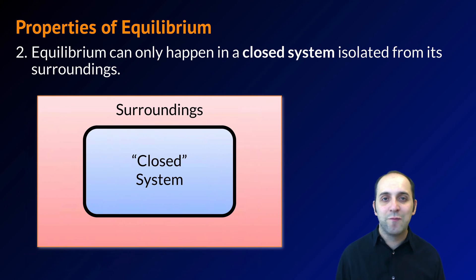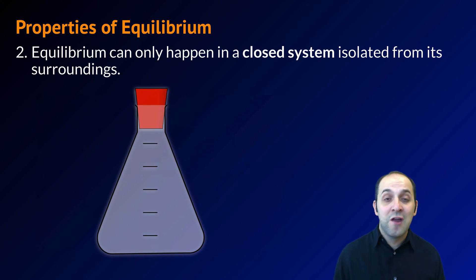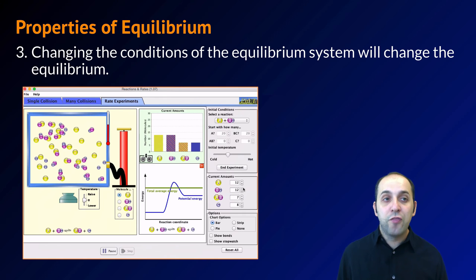In chemistry, we're not going to be dealing with jugglers. For the most part in chemistry, our systems are going to be things like beakers, stoppered beakers into which we're not putting or removing any matter. That's a good example of a closed chemical system for the purpose of equilibrium.